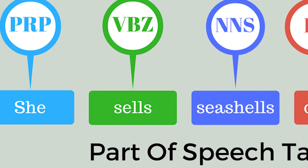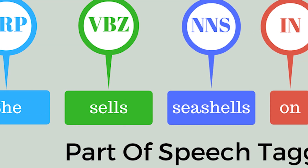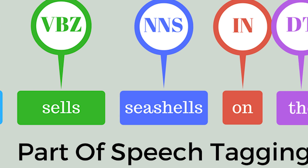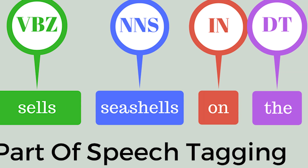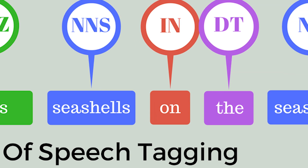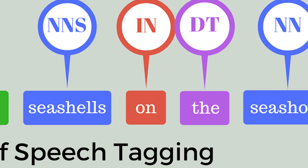POS tagging is the process of giving a specific grammatical label to each word in a sentence, depending on the role that that word plays in the sentence.